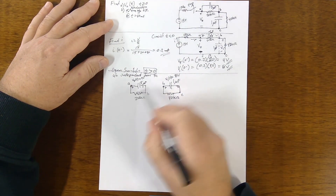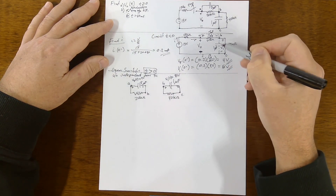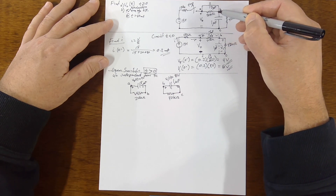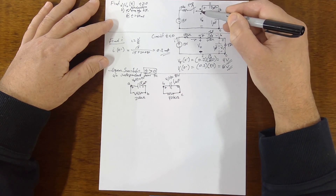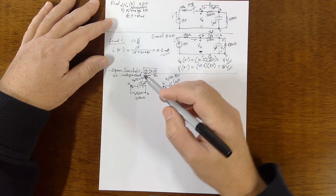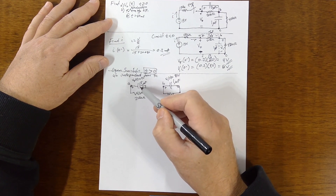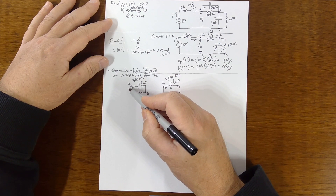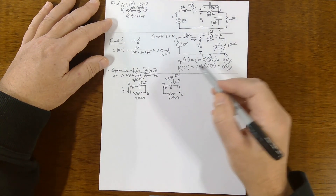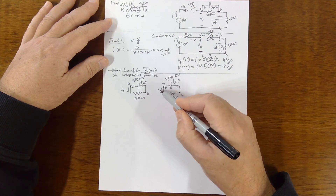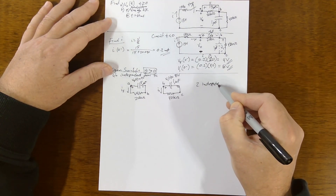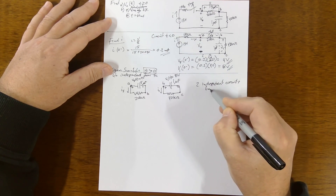After the switch opens, the capacitors act as sources, so the current I5 leaves from the positive terminal in the AB circuit, and current I1 leaves from the positive terminal in the BC circuit. These are two independent circuits for t > 0, and we can solve them independently.